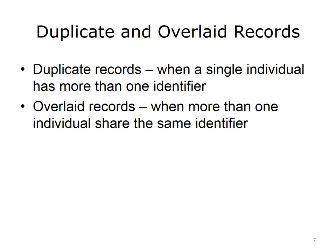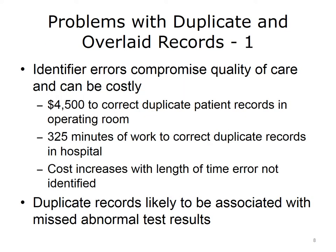Duplicate records are when more than one record exists for a patient, whereas overlaid records are when more than one patient is mapped into the same record. One study identified that errors in patient identifiers compromise the quality of care and can be costly, noting an expense of about $4,500 to correct duplicate patient records in an operating room, taking 325 minutes of work. The cost was found to increase with the length of time that the error was not identified. More recently, duplicate records have been shown to be more likely associated with missed abnormal test results.